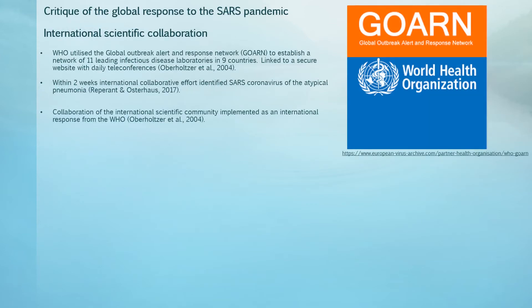The first aspect of the critique is the collaboration of the international scientific community. The WHO implemented an international response to SARS by utilising the Global Outbreak Alert and Response Network, which established a network of 11 leading infectious disease laboratories in nine countries. Within two weeks, the laboratories across the world identified SARS coronavirus as the causative agent of the atypical pneumonia. These laboratories were normally competitors in research, but they put their differences aside and freely shared information that led to finding the cause of the atypical pneumonia. This collaboration within the scientific community needs to continue as greater cooperation will assist with threats from newly emerging infectious diseases.